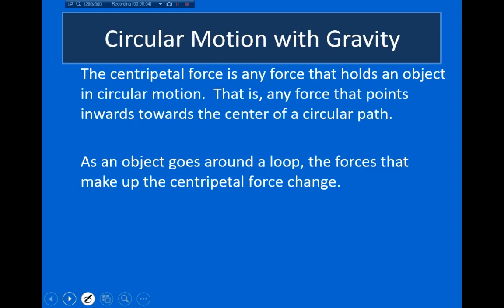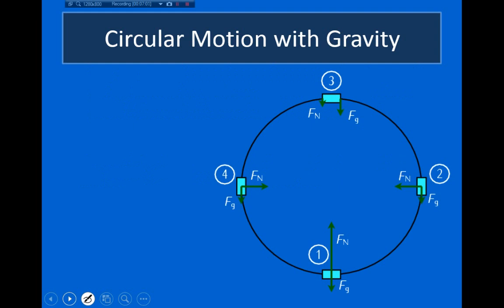At this point I'd like to end the video. In the next lecture, I want to talk about what happens when we have circular motion in the vertical direction — like a roller coaster going around a loop — where gravity also affects the object.